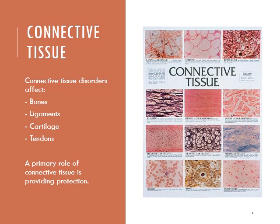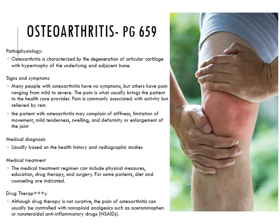Connective tissue disorders affect bones, ligaments, cartilage, and tendons. The primary role of connective tissue is to provide protection. Osteoarthritis starts on page 859 — I tried to put page numbers on the slides, but know they all start with an 8. Following along in the book as well as the chapter will be very helpful.